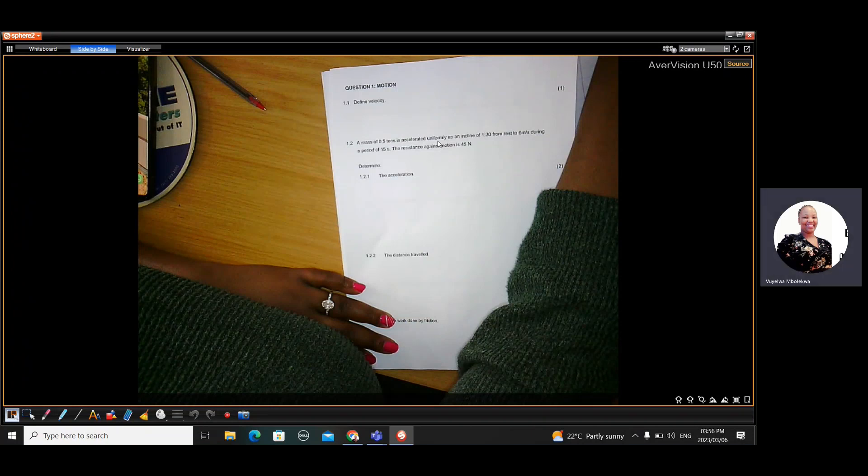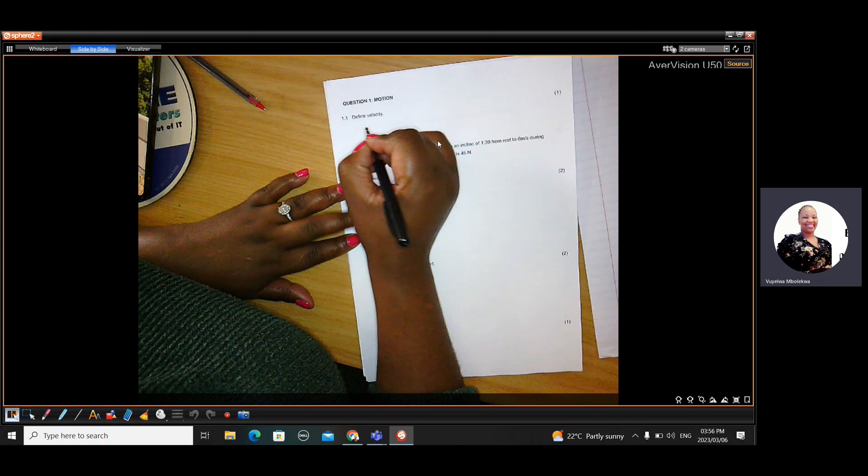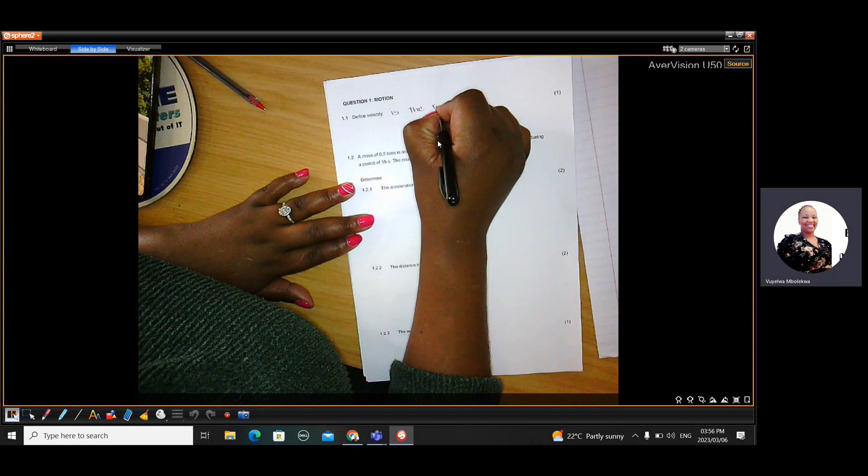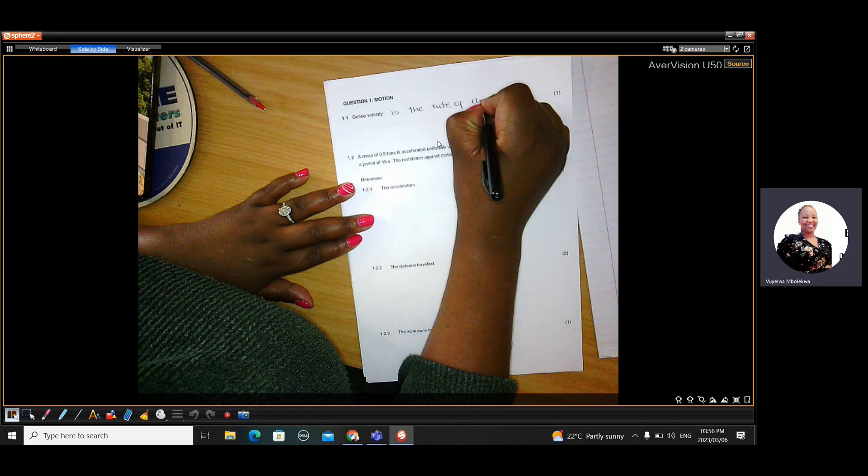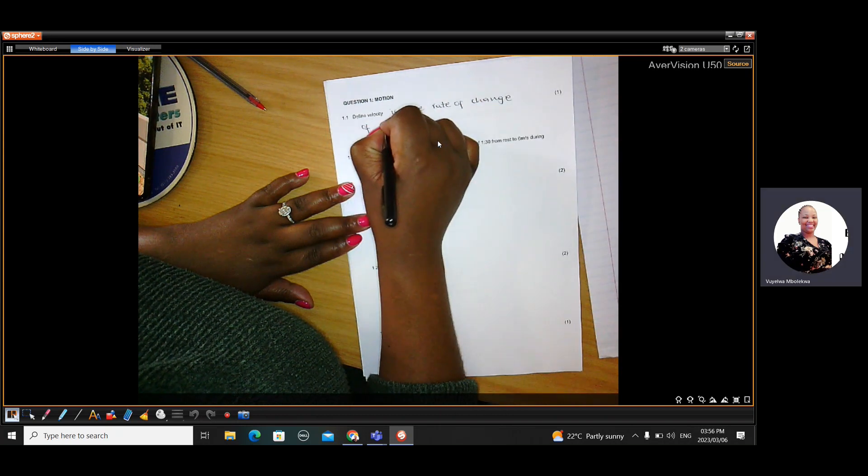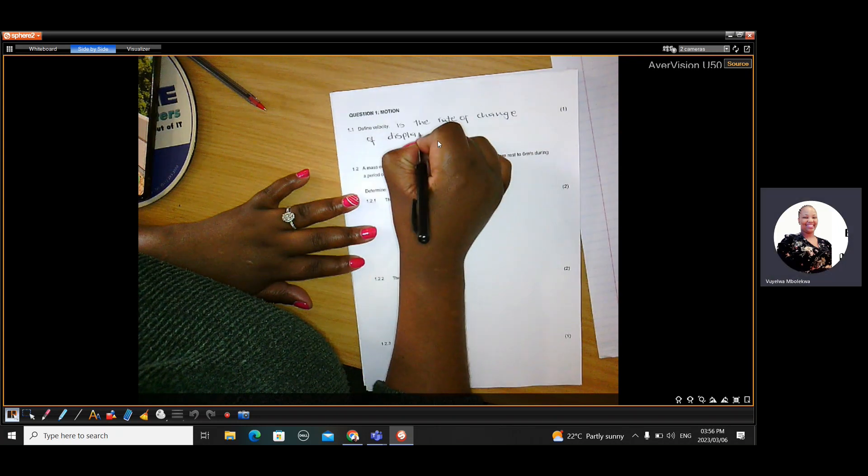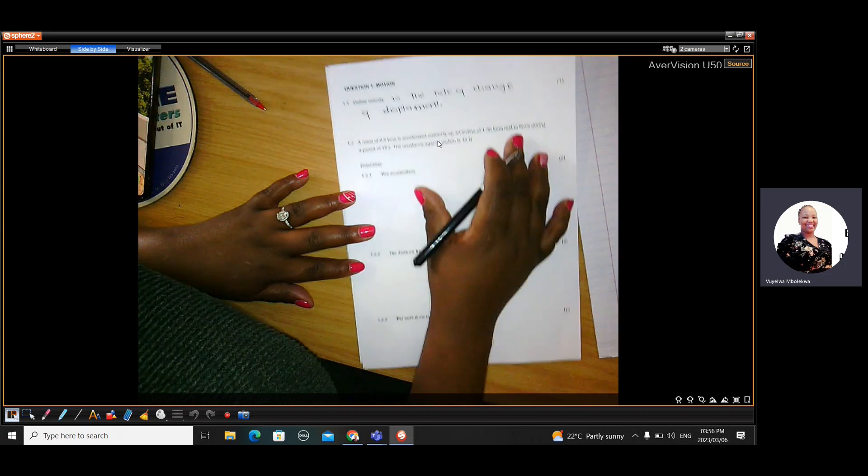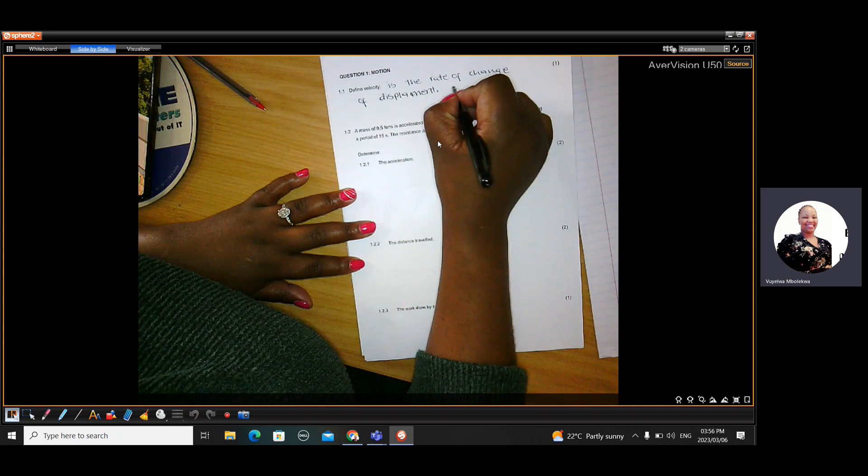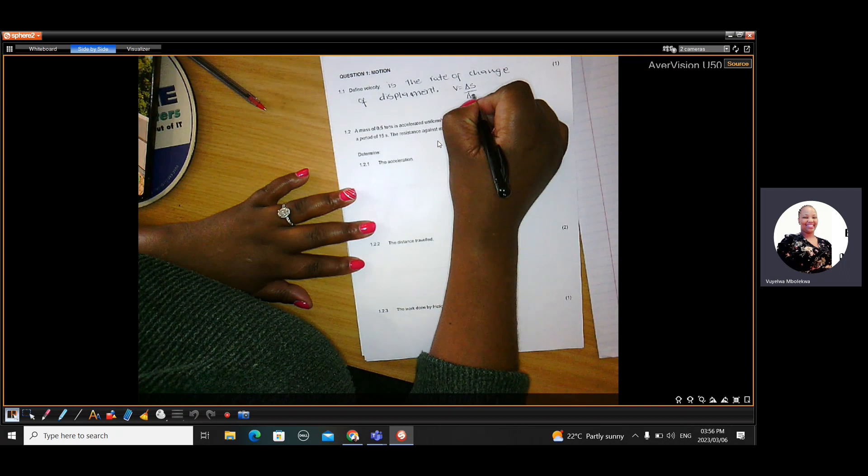So the first question was define velocity. Velocity is defined by saying it is the rate of change of displacement. So velocity is different from speed. Speed is when distance is changing, but velocity is when displacement is changing.